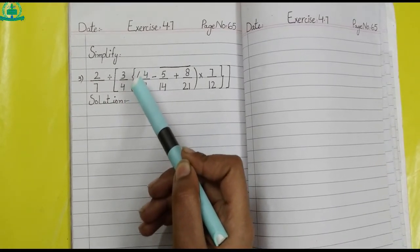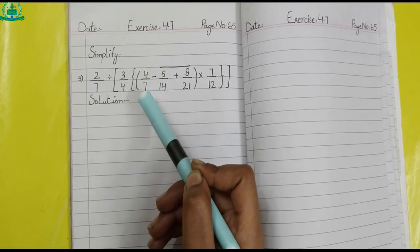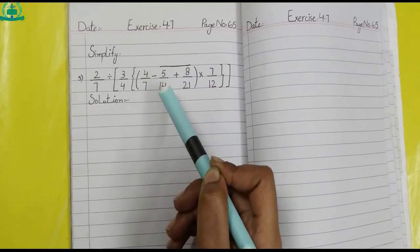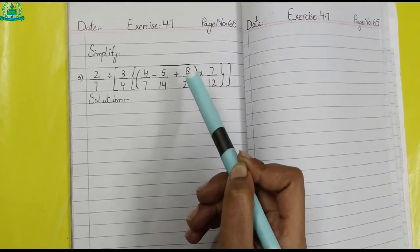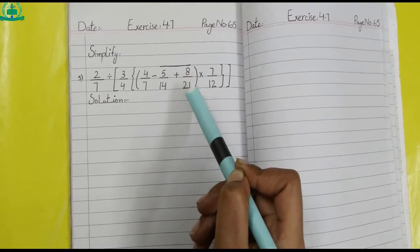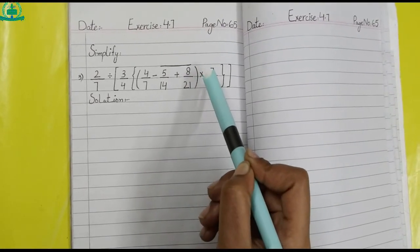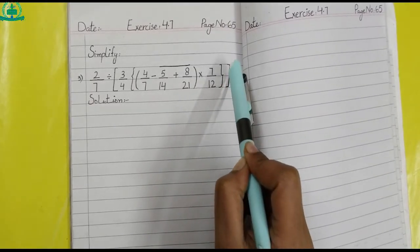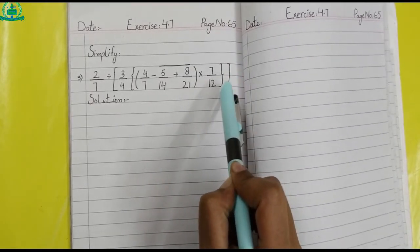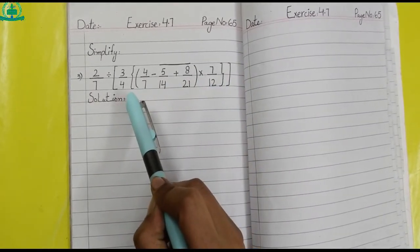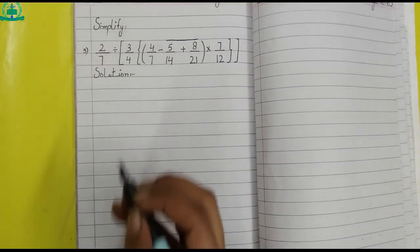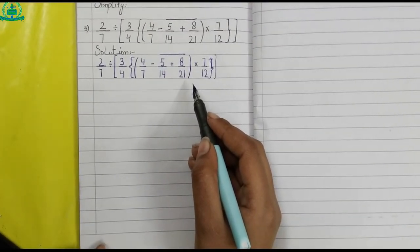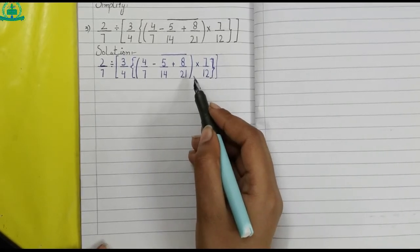Simplify question number 3: 2 upon 7 divide square bracket 3 upon 4 curly bracket round bracket 4 upon 7 minus bar 5 upon 14 plus 8 upon 21 round bracket close multiply 7 upon 12 curly bracket close square bracket close. Give heading: Solution. Rewrite the question.